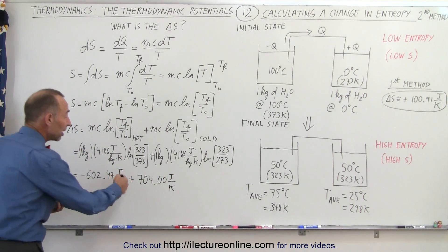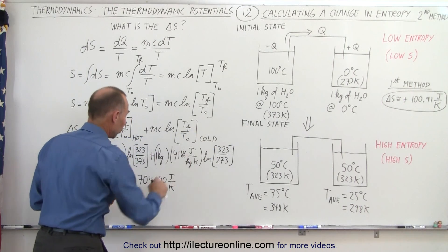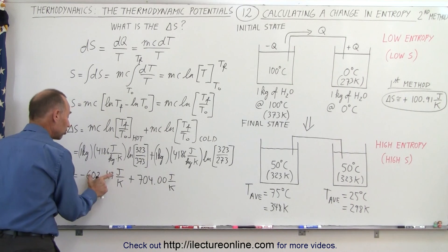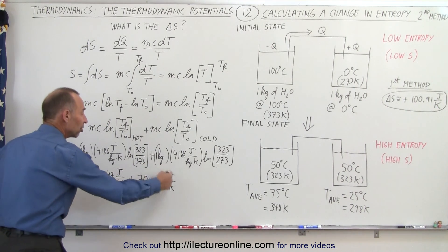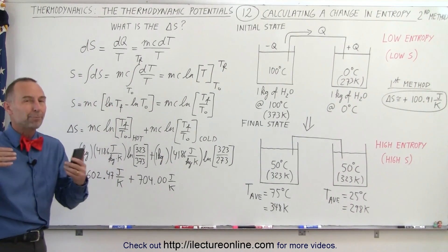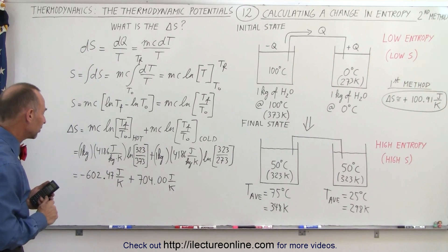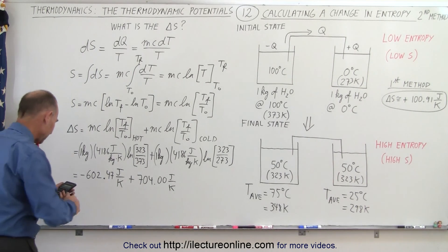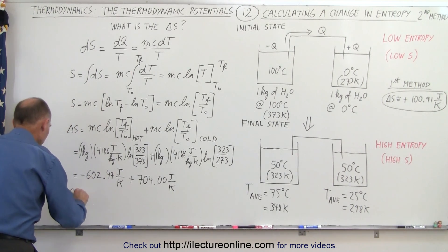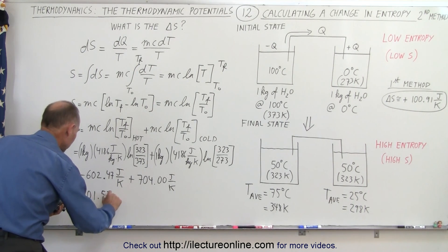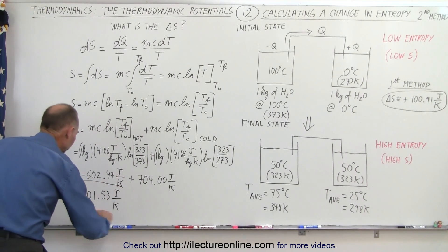Notice that the change in entropy at the cold reservoir is always going to be bigger in magnitude than the entropy change at the hot reservoir, so the positive change in entropy is always bigger than the negative change in entropy. When you add them together you always get a positive change in entropy. Taking 704.00 minus 602.47, the total change in entropy is equal to 101.53 joules per kelvin.